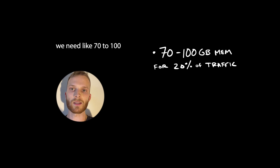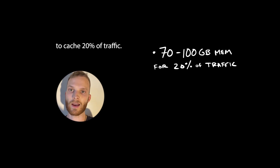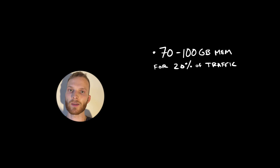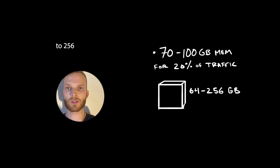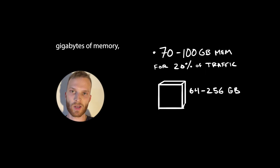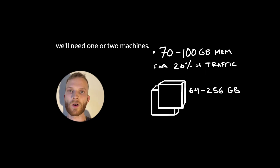Let's say in our system we need about 70 to 100 gigabytes of memory to cache 20% of traffic. Since a modern-day enterprise-level server can have about 64 to 256 gigabytes of memory, we'll need one or two machines.